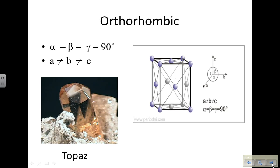In an orthorhombic crystal, your angles are again 90 degrees, but none of the sides are equal in length.